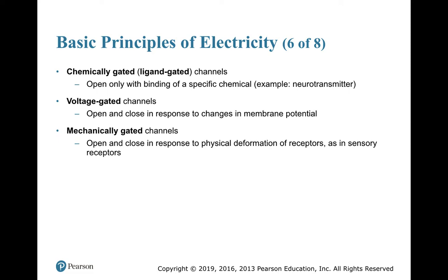In a chemically gated channel — also called a ligand-gated channel — when a chemical binds to that gate it opens, allowing the flow of whatever ion that channel is specific for. This is what we use when we talk about neurotransmitters. In a voltage-gated channel, when the membrane potential changes and a current begins to flow, that will open or close the channel. Mechanically gated channels open and close in response to physically changing the shape of the receptor, and some of our sensory receptors work that way.